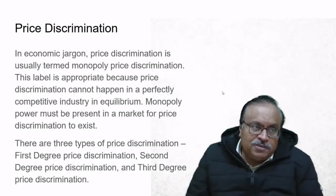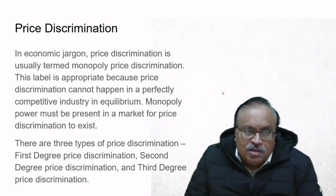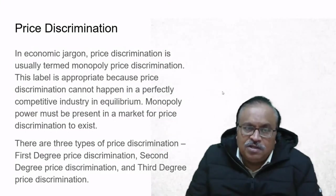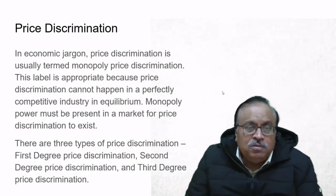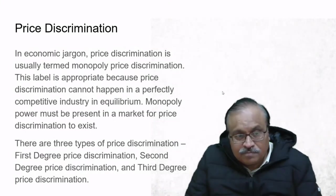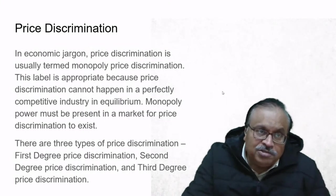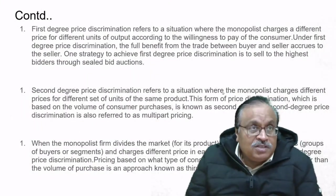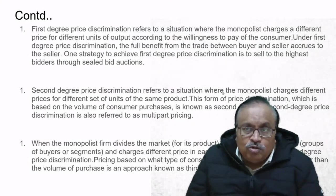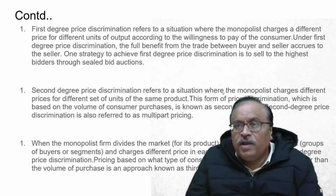Moving on to price discrimination. In economic jargon, price discrimination is usually termed monopoly price discrimination, because price discrimination cannot occur in a perfectly competitive industry—monopoly power must be present. There are three types: first-degree, second-degree, and third-degree price discrimination. First-degree price discrimination refers to a situation where the monopolist charges a different price for different units of output according to the willingness to pay of each customer.